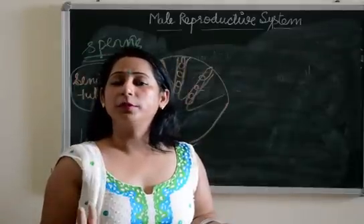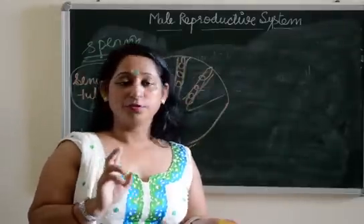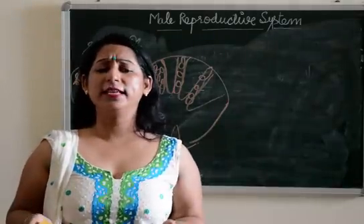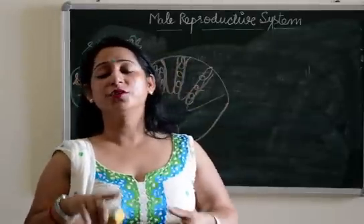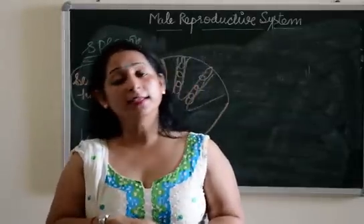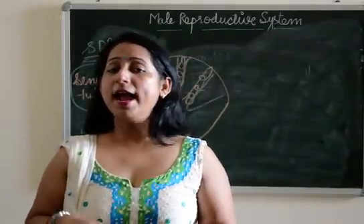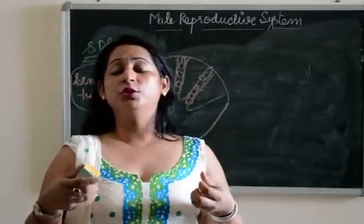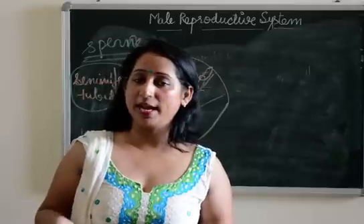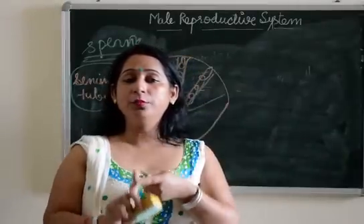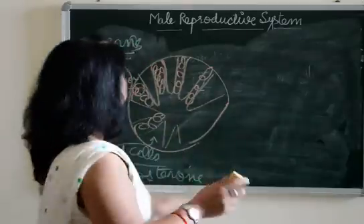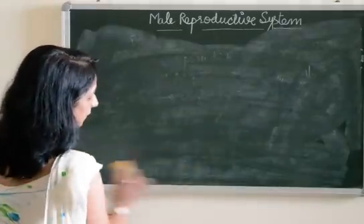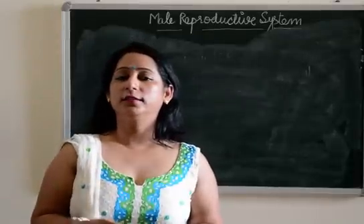You must know what semen is. Semen is a mixture of sperms plus the secretion from prostate gland, Cowper's gland, and seminal vesicles. It is a milky white fluid which passes out from the male's body during the process of ejaculation.